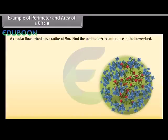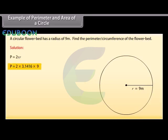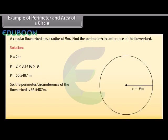Example 1: A circular flower bed has a radius of 9 meters. Find the perimeter or circumference of the flower bed. Solution: We know that perimeter p equals 2πr. Substituting the values, p equals 2 × 3.1416 × 9, which equals 56.5487 meters. So the perimeter or circumference of the flower bed is equal to 56.5487 meters.